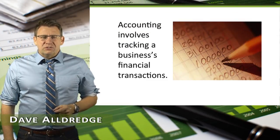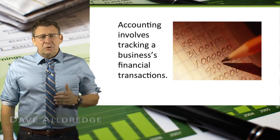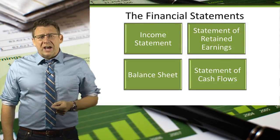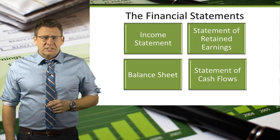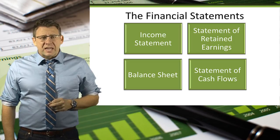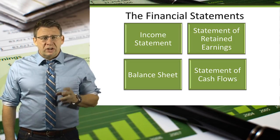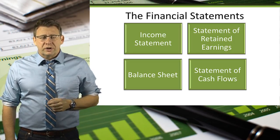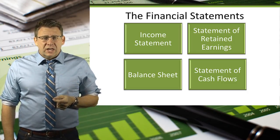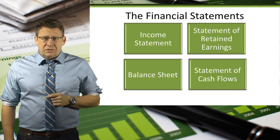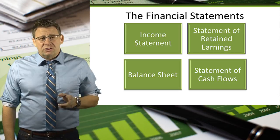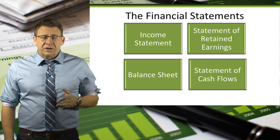Financial accounting records the financial transactions of a business and communicates this information to potential investors and creditors. The output of the accounting process are the financial statements. An income statement reports a business's profitability. The statement of retained earnings reports the change in retained earnings for a corporation. A balance sheet details the economic resources and the claims on those resources. Finally, a statement of cash flow summarizes the cash inflows and outflows for various business activities.